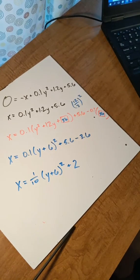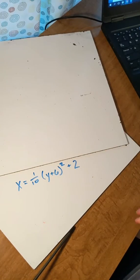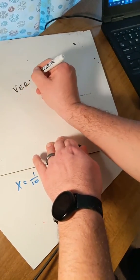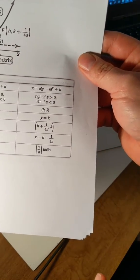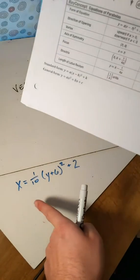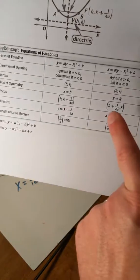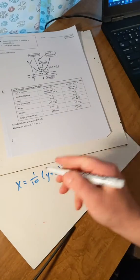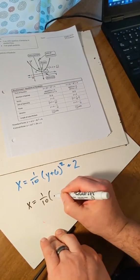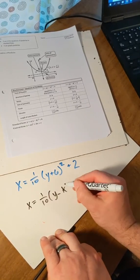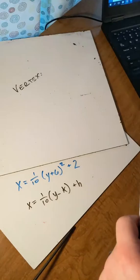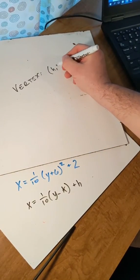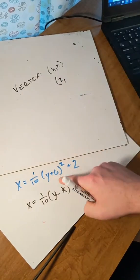Now what we need to do is find those points. The last question is: now that we have this equation, can we find the vertex? We have to be careful here because now our equation is an x equals. In standard form, x equals a times y minus k squared plus h. Be careful: a is 1 tenth, and if we have a positive 6 here, that means k is negative 6. Our vertex, which is at h, k, is at h equals 2 and k equals negative 6.